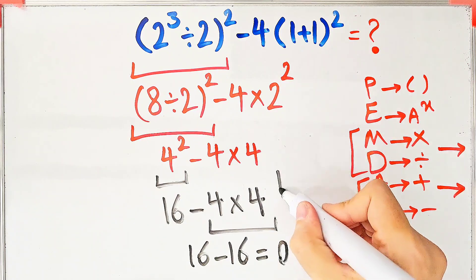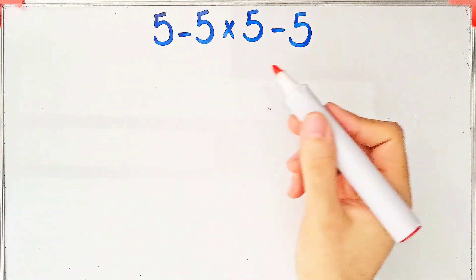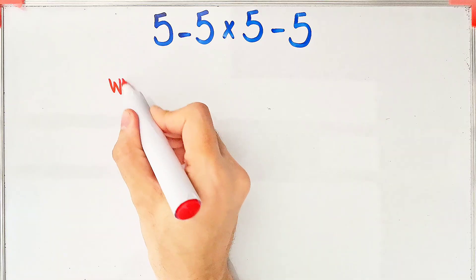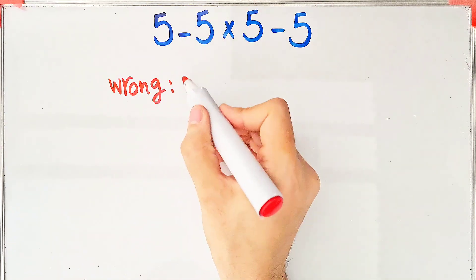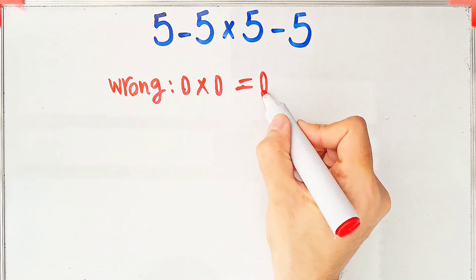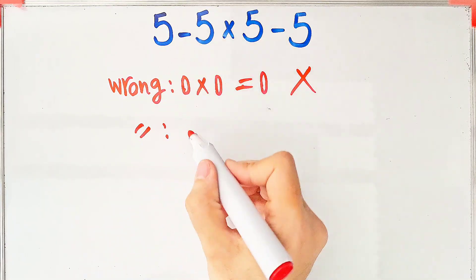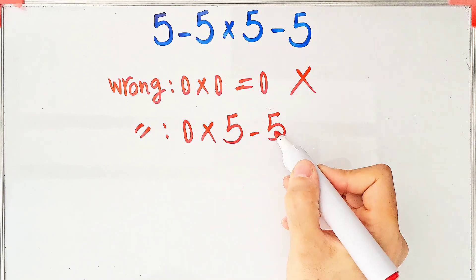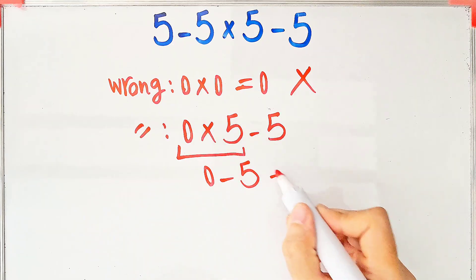Let's solve another question about the PEMDAS rule. Some people solve it like this: five minus five equals zero, zero times five minus five equals zero — wrong. Others compute zero times five then minus five: zero times five equals zero, and zero minus five equals negative five — but this answer is also wrong.